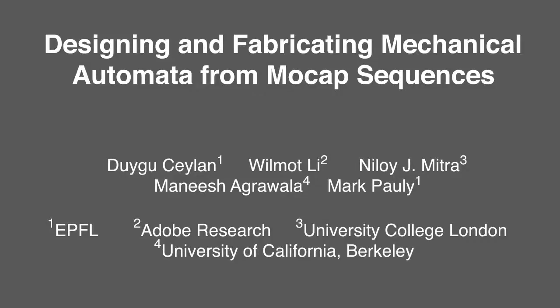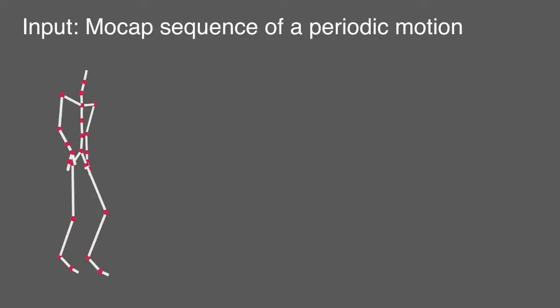We present an automatic system to generate mechanical figures that mimic human motions. The input to our system is a periodic motion sequence of an articulated 3D human figure.